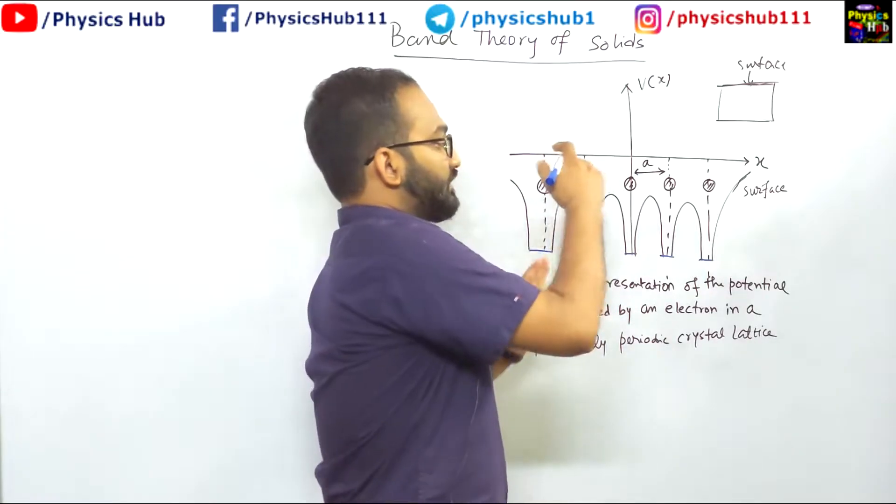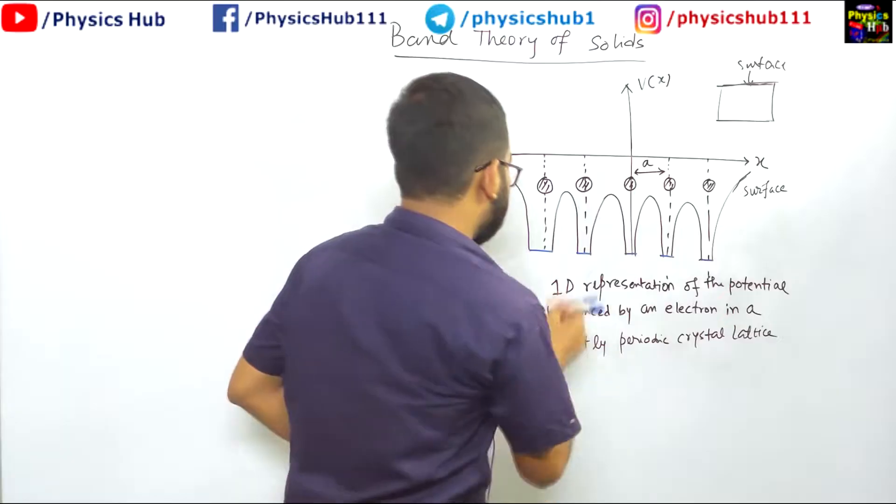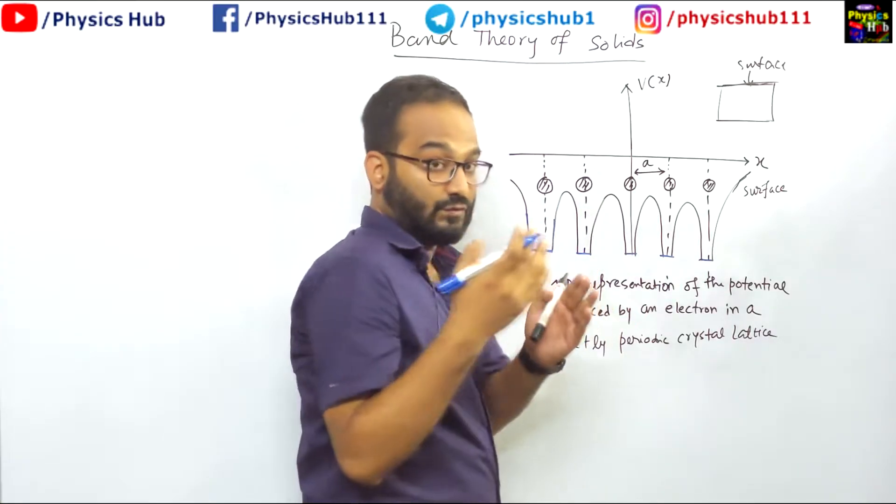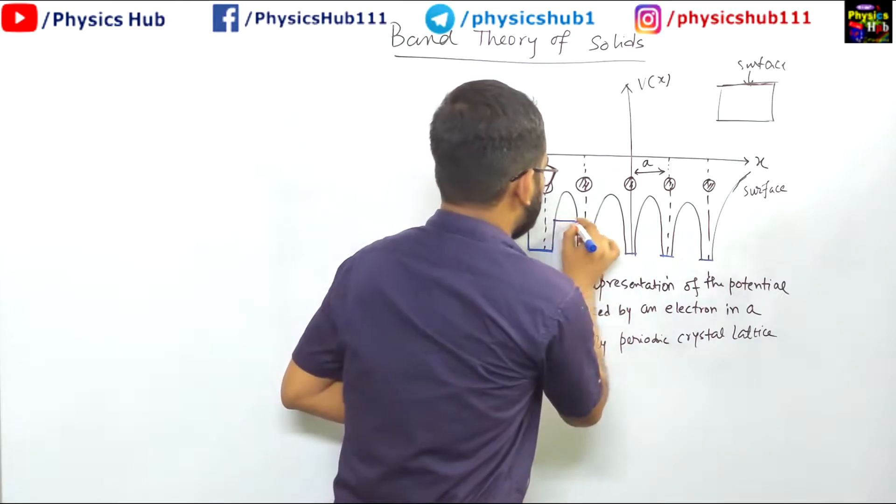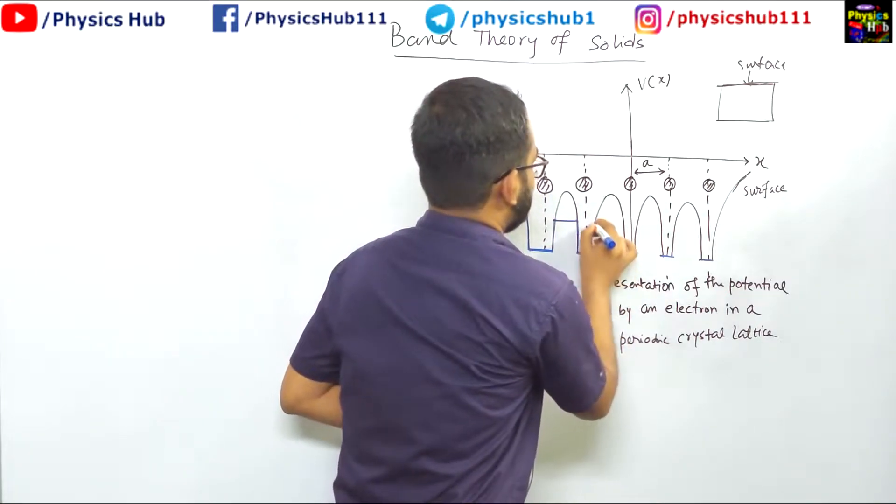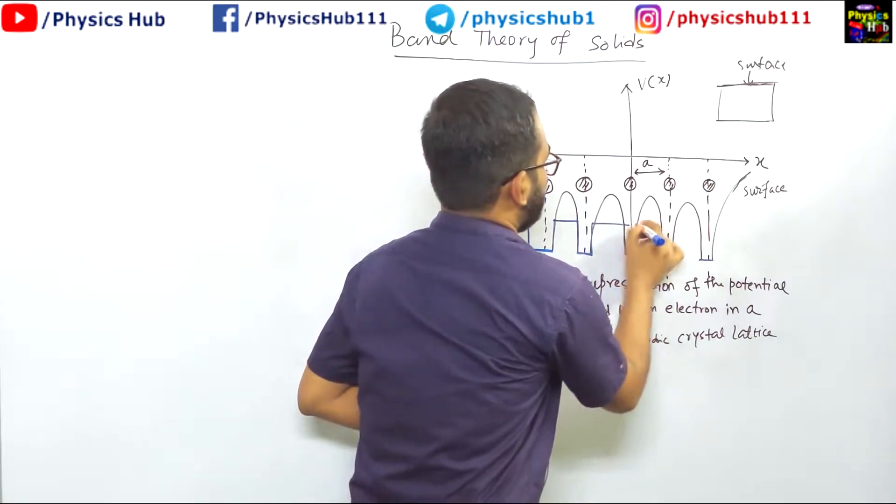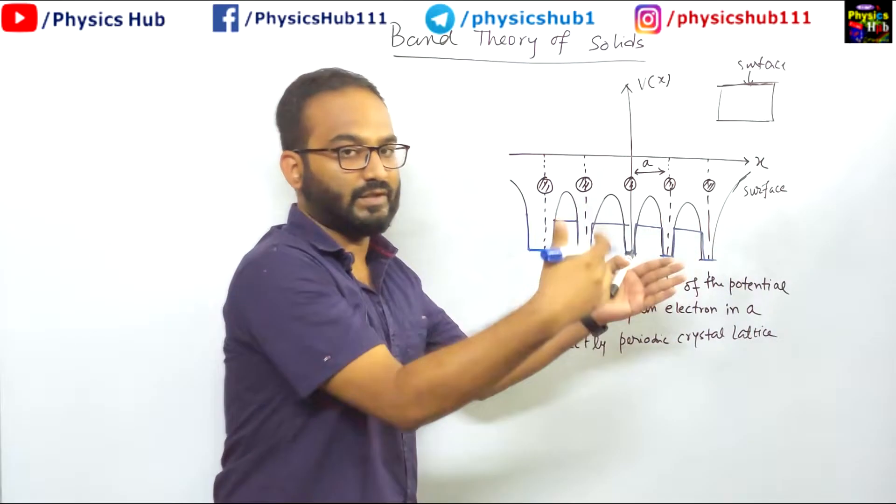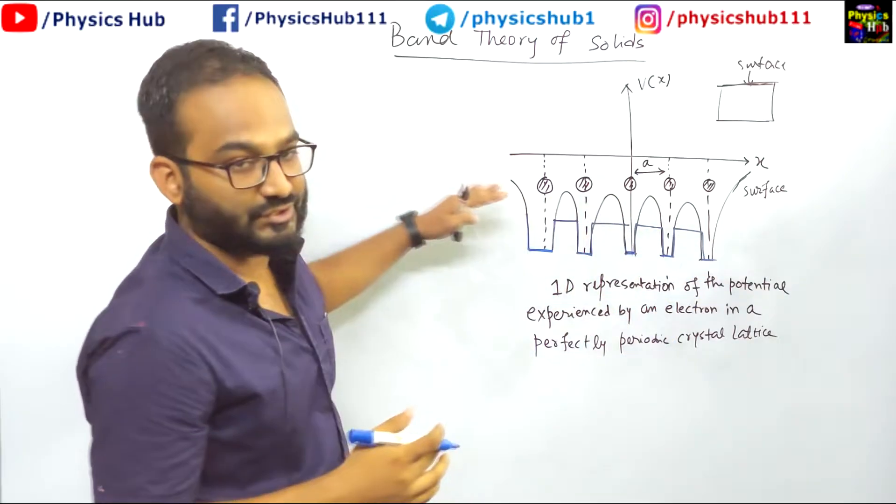Like instead of this nonlinear type of thing, if we just take a square type of potential, then you know how to solve this kind of square type of potential. My picture is not coming good. This should be cool. We will do it in the next section.